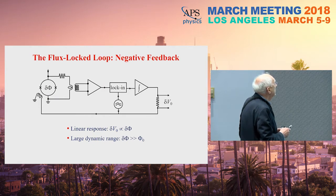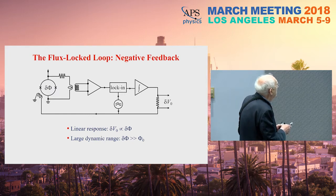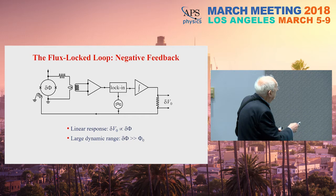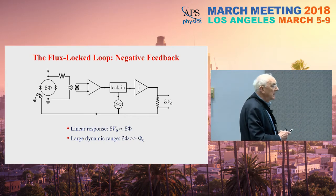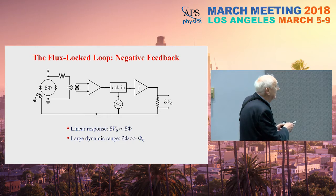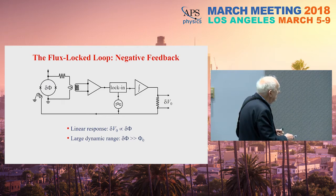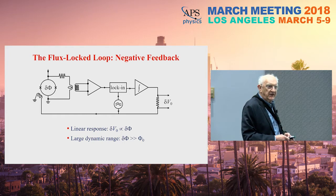Many SQUIDs are operated in the flux lock loop with negative feedback. A small change in flux produces a voltage output from the electronics, which is coupled as a current via a resistor back into a coil inductively coupled to the SQUID, keeping the flux in the SQUID loop fixed. The output voltage is linearly proportional to the input flux change, giving a linear response and enabling operation over a very large dynamic range — maybe hundreds of thousands of flux quanta.